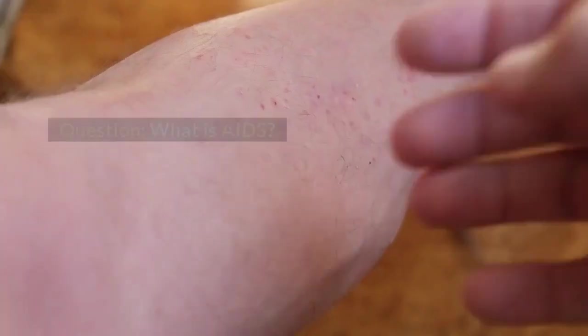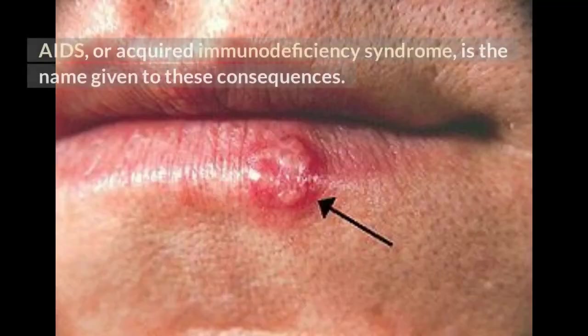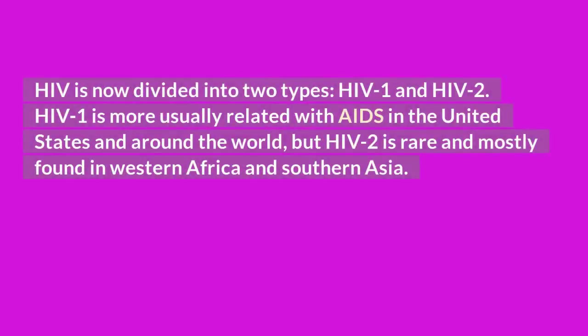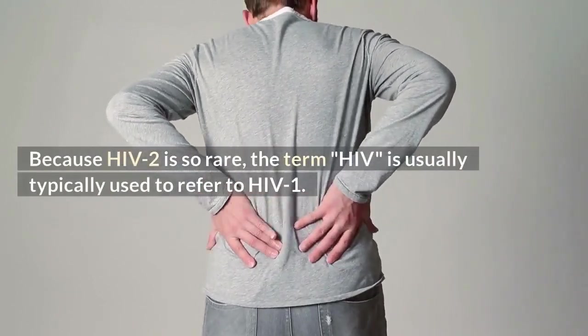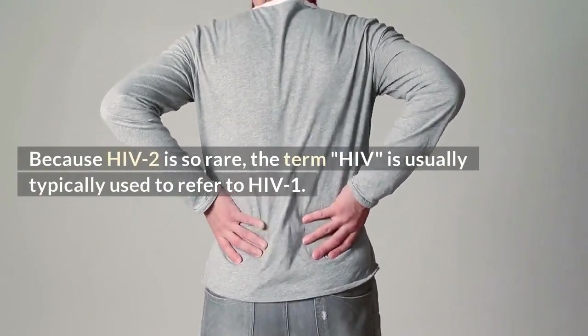What is AIDS? AIDS, or Acquired Immunodeficiency Syndrome, is the name given to these consequences. HIV is now divided into two types: HIV-1 and HIV-2. HIV-1 is more usually related with AIDS in the United States and around the world, but HIV-2 is rare and mostly found in Western Africa and Southern Asia. Because HIV-2 is so rare, the term HIV typically refers to HIV-1.